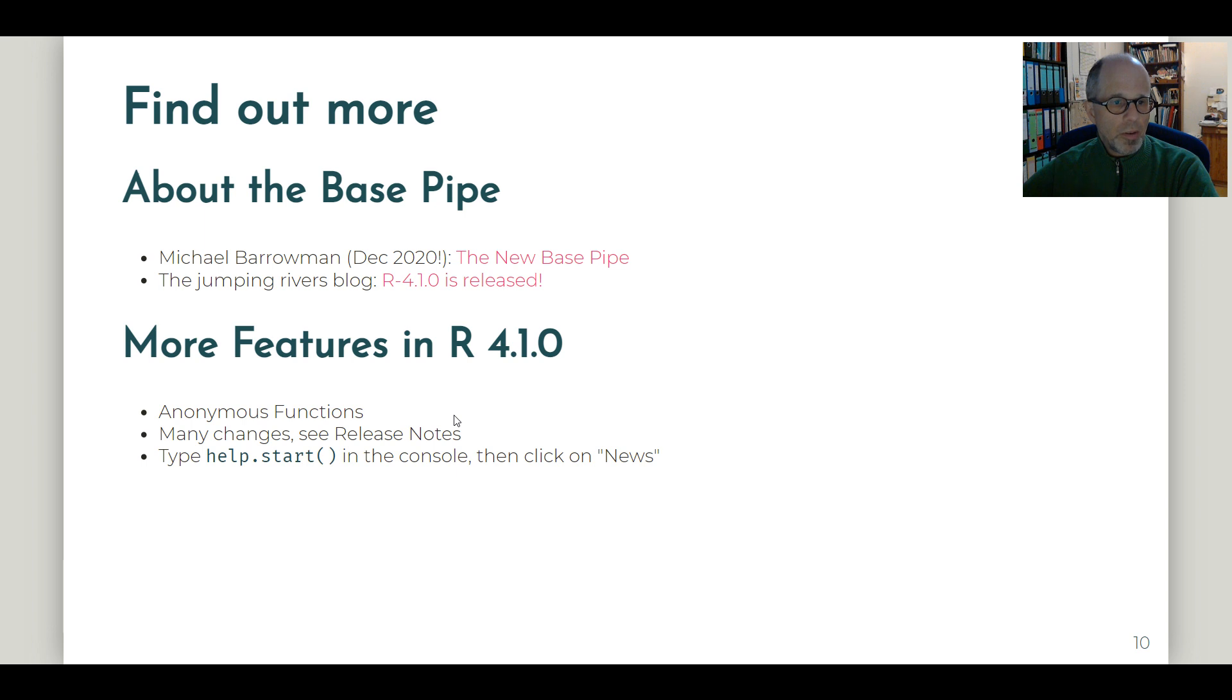Right. This was just about it. I just want to give a shout out to Michael Barrowman who already wrote half a year before the official release about the new base pipe and even did some benchmarks using the development version of R. And also the jumping rivers blog was very quick writing about the new R release now. The base R pipe is not the only significant change in R 4.1. There's also improved support for anonymous functions, a shortcut that wasn't there before. So maybe I'll talk about this in another video. You can check it out in the release notes or type helpstart in the console and click on news to access the release notes.